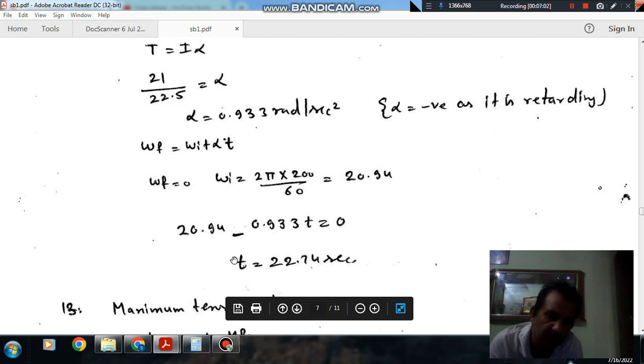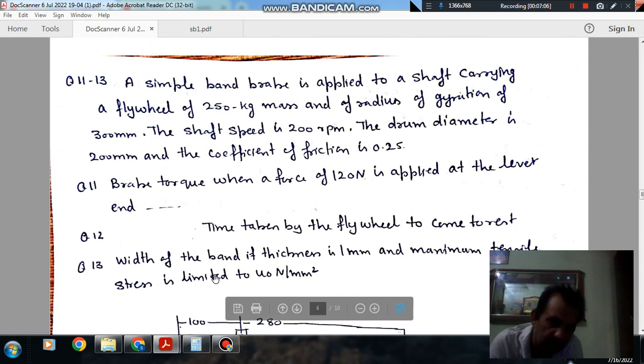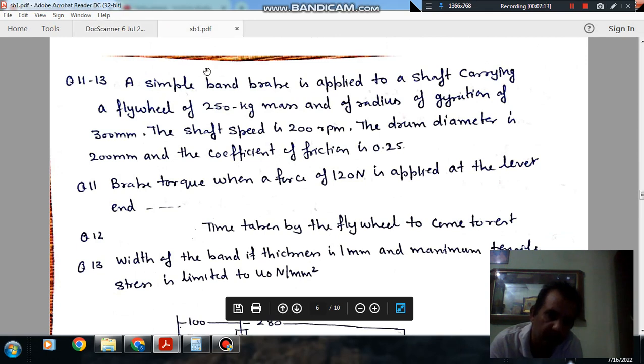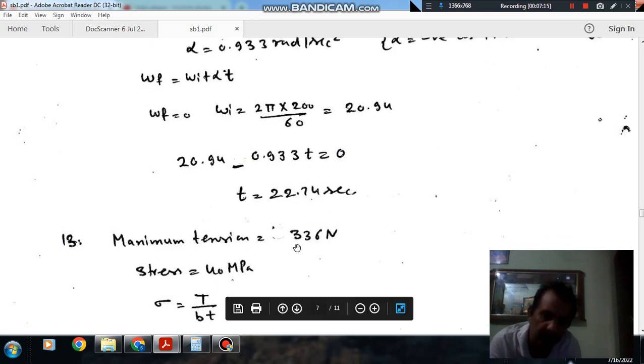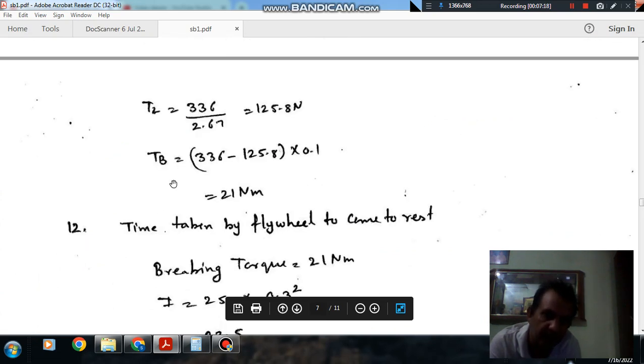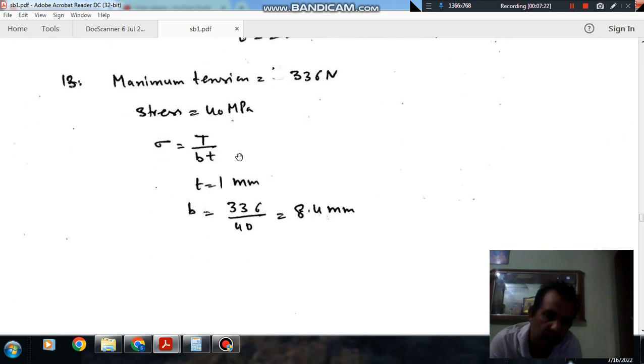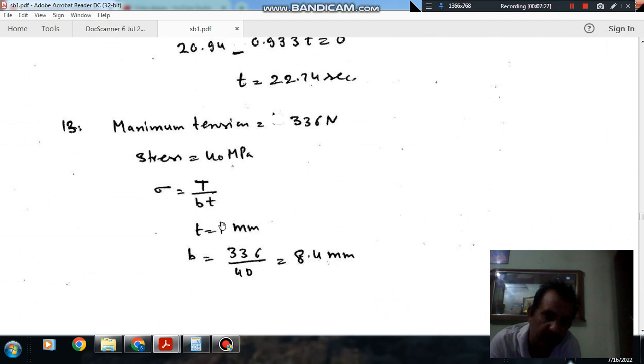Next we have to calculate the width of the band if the thickness is 1 mm and stress is 40 N/mm². Maximum tension that we have calculated is T1, which is 336 N. Area of the strip will be B into T. T is given as 1 mm. Equating stress as maximum tension by area, maximum tension is 336, T is 1 mm, and sigma is 40 N/mm². So B comes out as 8.4 mm. We are assuming it as rectangular, so that's why we are taking area as B times T.